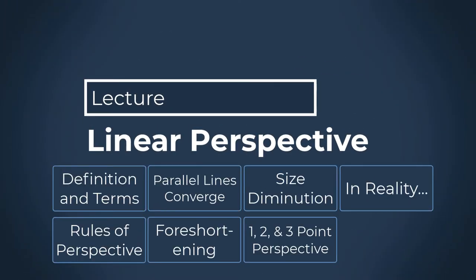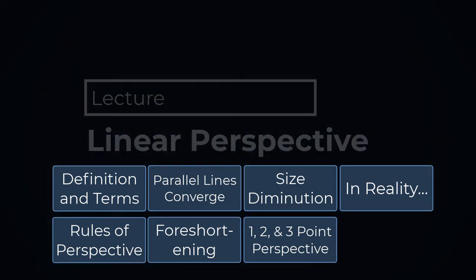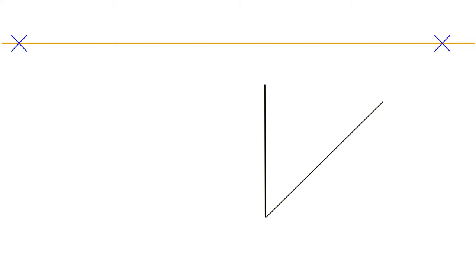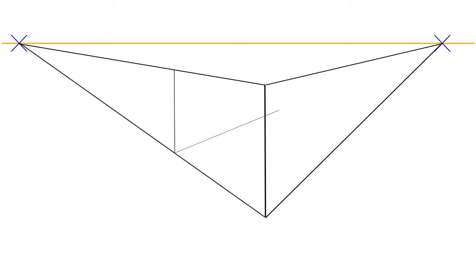Linear Perspective. This lecture is intended to introduce you to the basics of linear perspective. Linear perspective is a system used by artists for creating the illusion of three-dimensional space on a two-dimensional surface.